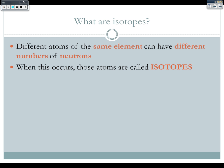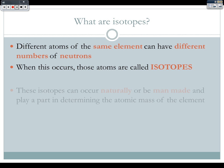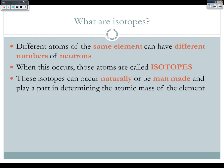Isotopes have the same number of protons, because they are the same element, but they have a different number of neutrons. Isotopes can occur naturally, or can be man-made, and they play a huge part in determining the atomic mass of the element, because the atomic mass comes from the mass of the protons and the mass of the neutrons.